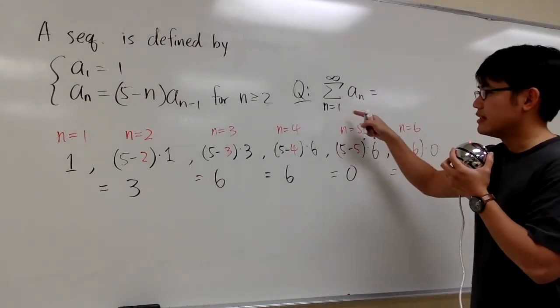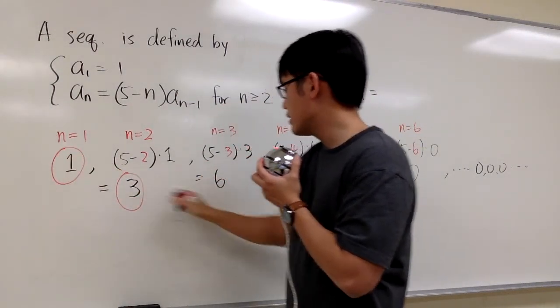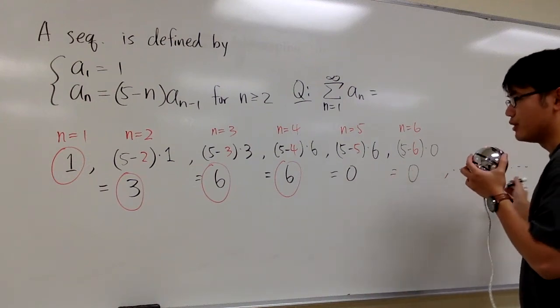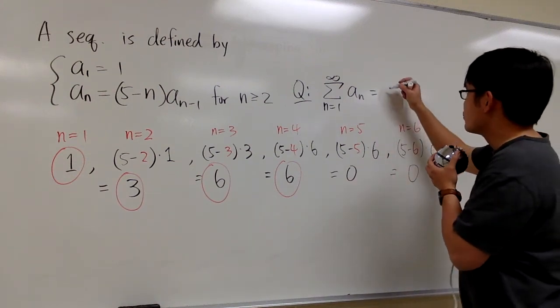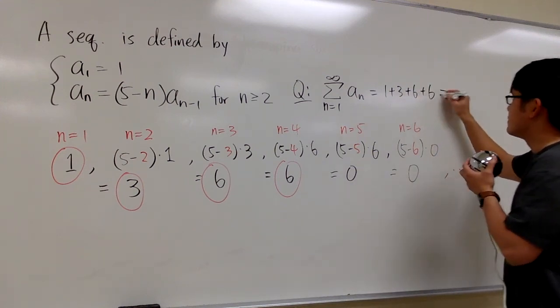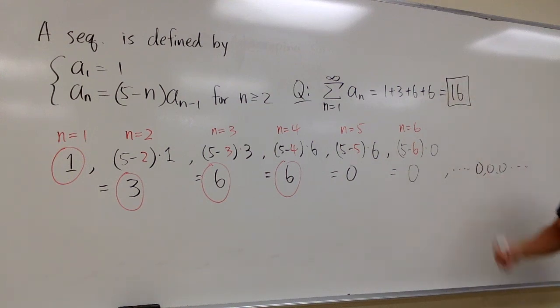So, let's go ahead and add this up. We have the 1 right here, the 3 right here, the 6 right here, and the 6 right here. Anything else doesn't really matter. It's just 0. So, let's work out 1 plus 3 plus 6 plus 6. And the answer to this will be 16. And that's the answer.